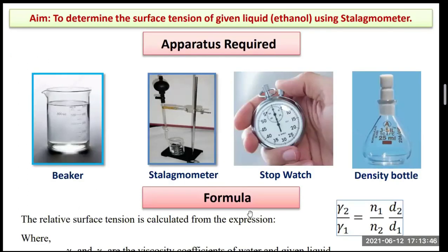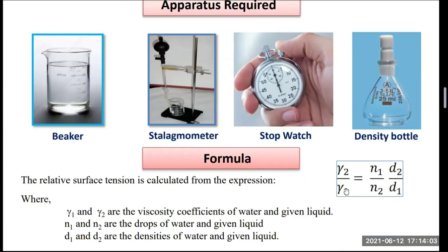We also need a density bottle — it may be a 10 ml or 25 ml gravity bottle. We need this formula: γ1 / γ2 = (n1 / n2) × (d2 / d1), where d is the density.